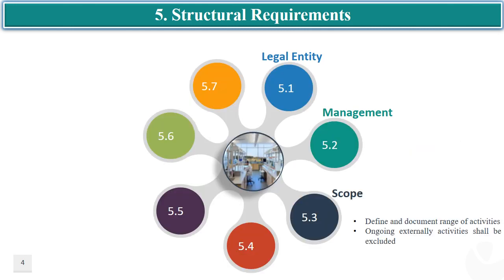Clause 5.3 states that a laboratory shall define the range of activities to be covered under its accreditation scope as per ISO/IEC 17025. The scope shall not include any externally provided laboratory activities on an ongoing basis. This means that the laboratory is expected to be accredited for activities for which it is competent to perform using its own resources only. Additionally, the accreditation scope shall be documented.